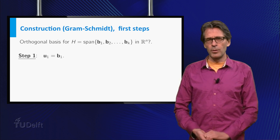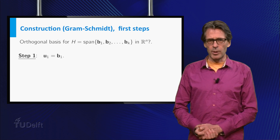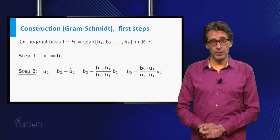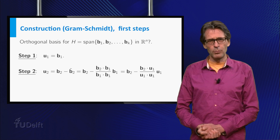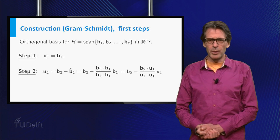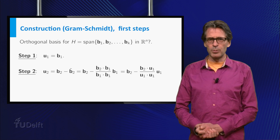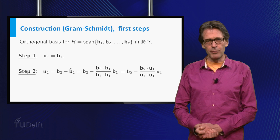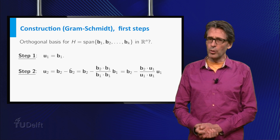The first step for u1 simply take b1. Next for u2 take b2 minus the projection of b2 onto the span of b1. Here we use the projection formula for the first time, and in this step it is irrelevant whether we use b1 or u1.